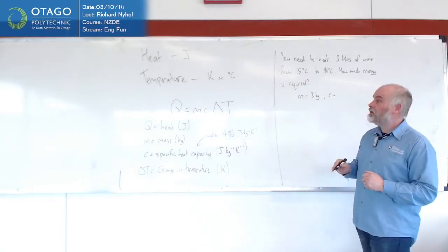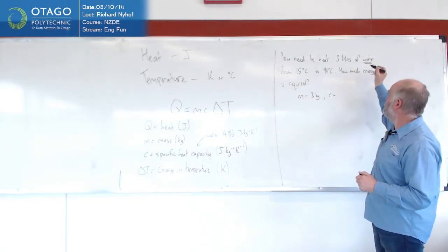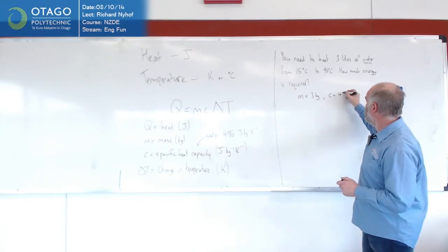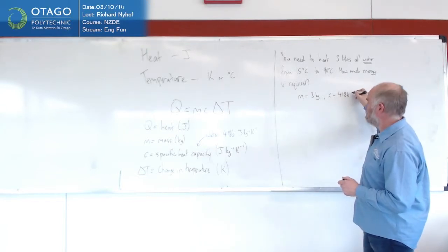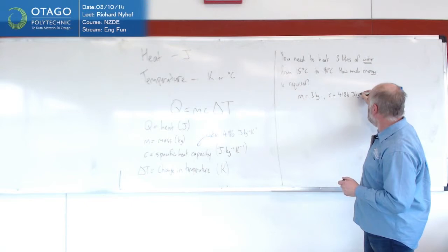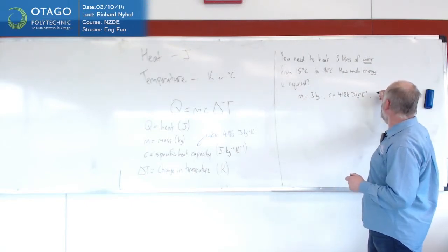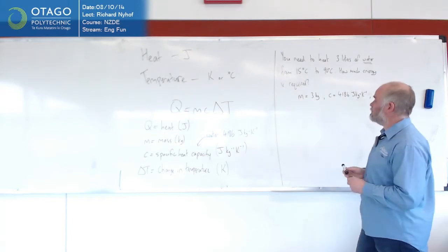Specific heat capacity, the fact we talked about water is enough to tell us that the specific heat capacity is 4186 joules per kilogram per Kelvin.